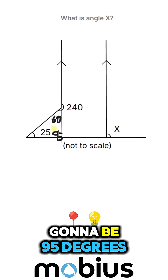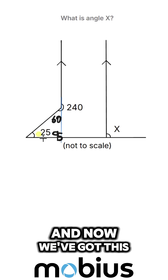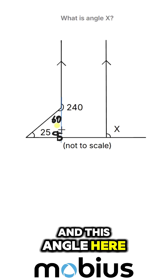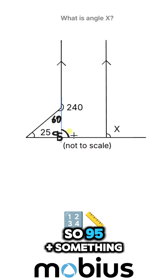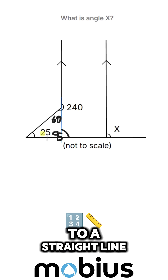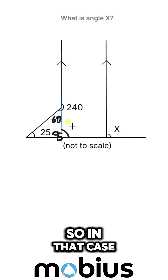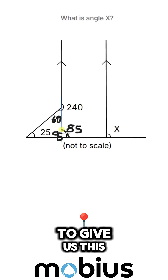So this angle in here we know is going to be 95 degrees — sorry, that's a bit messy. Now this angle here and this angle here are going to be supplementary angles, so 95 plus something has to add up to a straight line, has to add up to 180 degrees. So 95 plus 85 gives us 180.